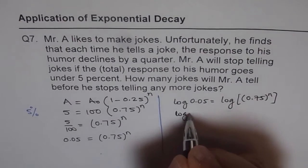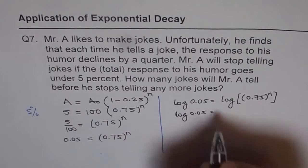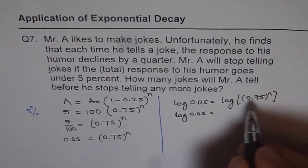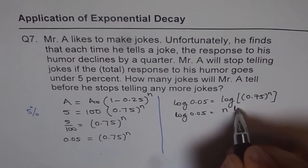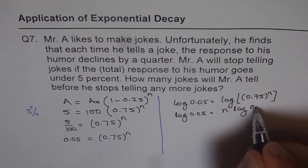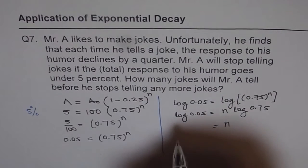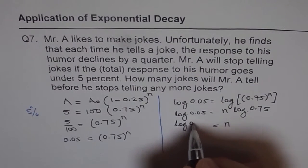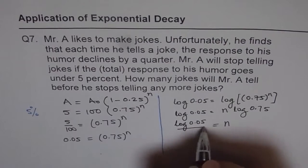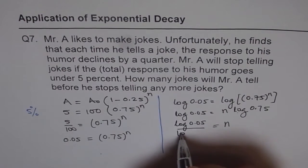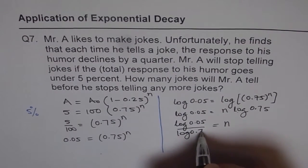So here we get log of 0.05. And using the laws of log, we get n times log of 0.75.